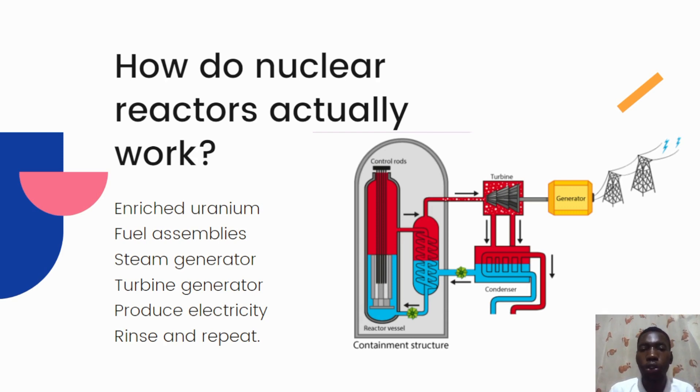The steam generator converts the heat from the reactor core into steam, which is then used to drive a turbine generator to produce electricity. After passing through the turbine, the steam is condensed back into water and returned to the steam generator to repeat the cycle.